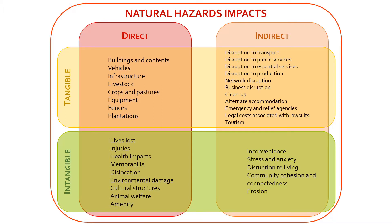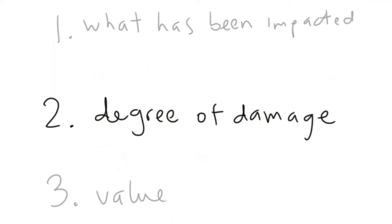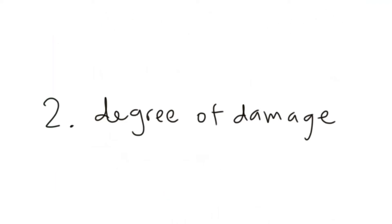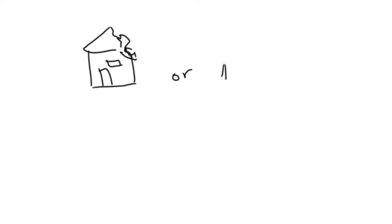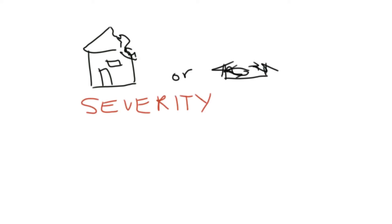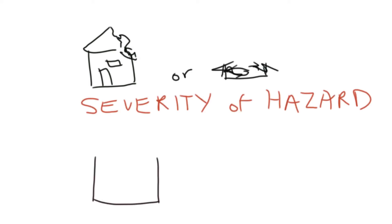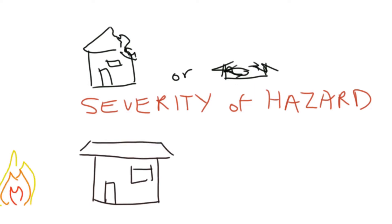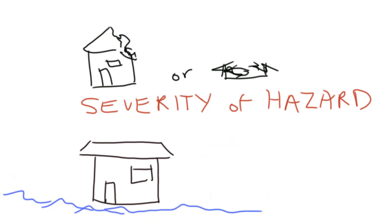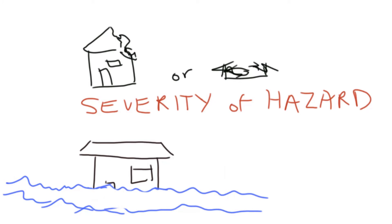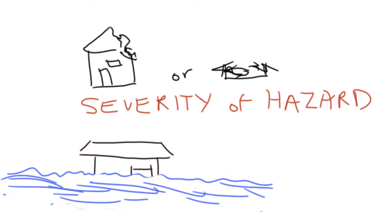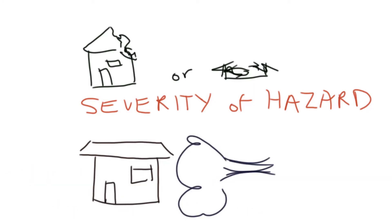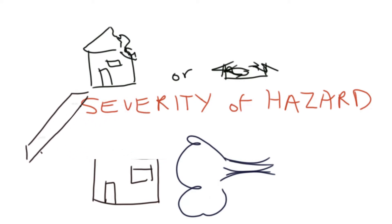Second, we need to know the degree of damage caused to the things that were impacted by the hazard, whether it is complete or partial damage. This depends on the severity of the hazard. So for instance, for bushfires, it usually depends on the level of intensity of the fire when it came into contact with the asset. For floods, it usually depends on the water depth and flow velocity. For cyclones, it usually depends on wind speed, etc.